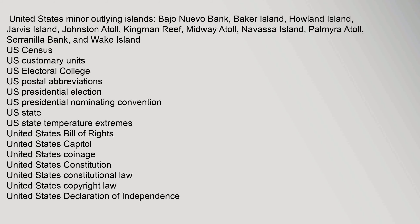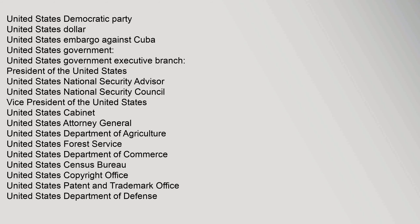United States Copyright Law, United States Declaration of Independence, United States Democratic Party, United States Dollar, United States Embargo Against Cuba, United States Government — Executive Branch: President of the United States, United States National Security Advisor, United States National Security Council, Vice President of the United States, United States Cabinet, United States Attorney General, United States Department of Agriculture, United States Forest Service, United States Department of Commerce, United States Census Bureau, United States Copyright Office, United States Patent and Trademark Office, United States Department of Defense.